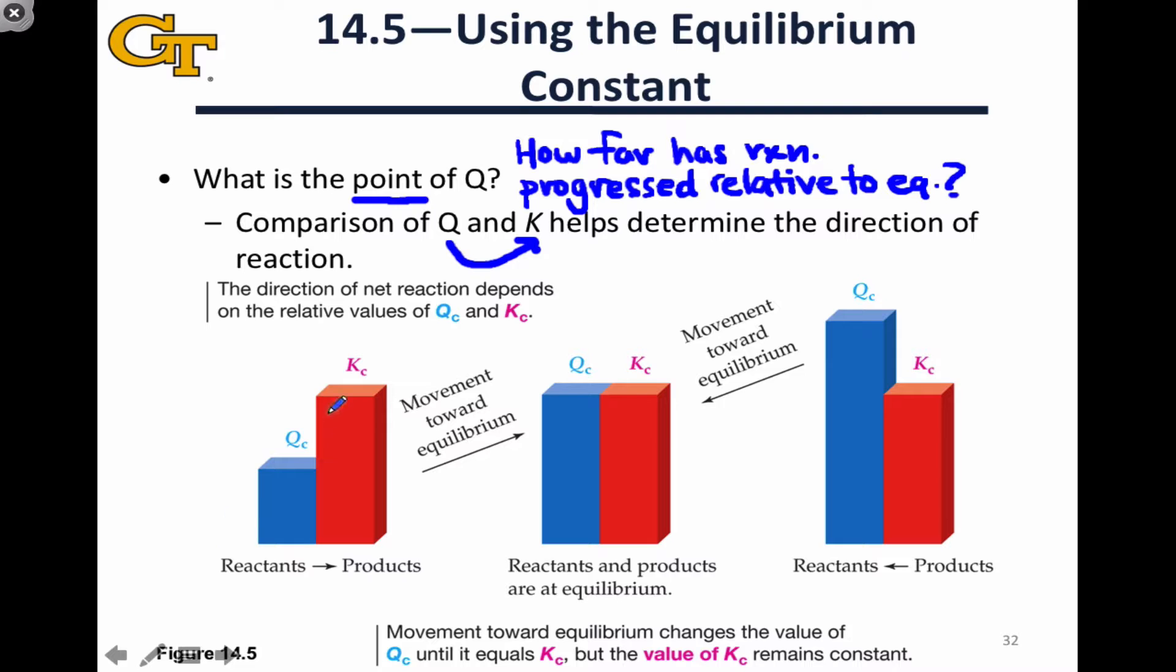I really like the graphical display that's here that shows you how this works. So Kc is our benchmark. This is going to be a given value that's going to set essentially how far the reaction wants to go towards reactants or products. Notice in all three of these diagrams that Kc is at the same level. Kc is independent of reaction conditions. It only depends on the nature of the reacting species and the stoichiometric coefficients and the concentrations at equilibrium. On the left-hand side, we're seeing a situation where Qc is less than Kc.